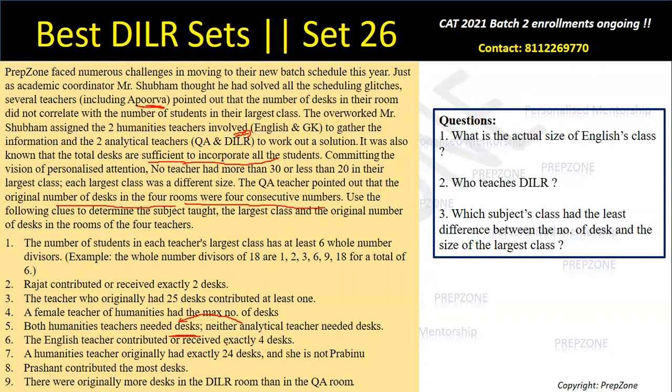The English teacher contributed or received exactly four desks. Since English is a humanities subject, and humanities teachers need desks, the English teacher must have received four desks.